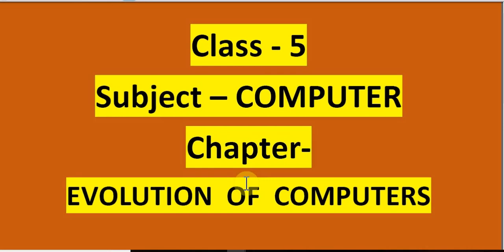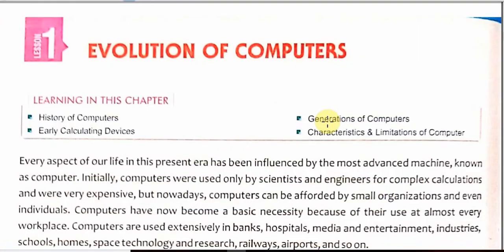Welcome class 5 students for this computer subject. This is class 5 and the chapter name is evolution of computer. Learning in this chapter covers history of computers, early calculating devices, generation of computers, and characteristics and limitations of computer. In this session we will discuss about these four points.